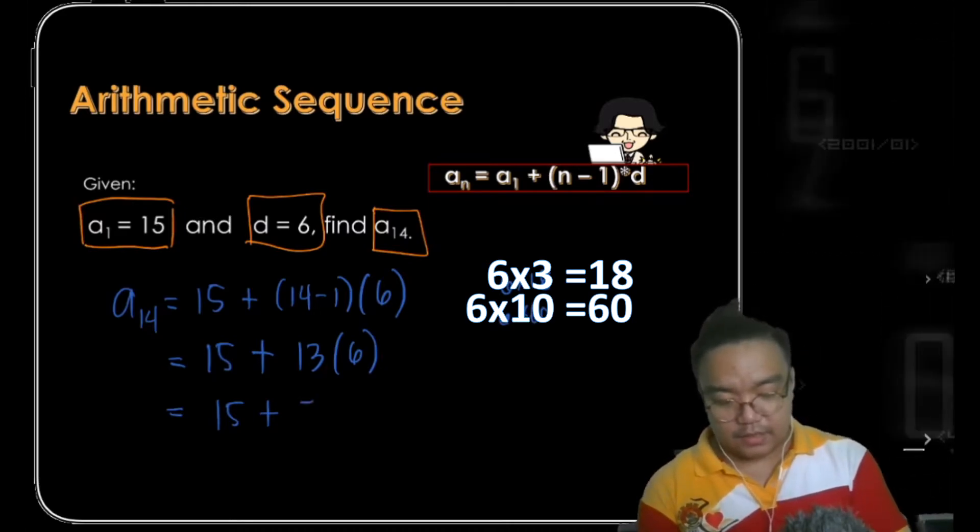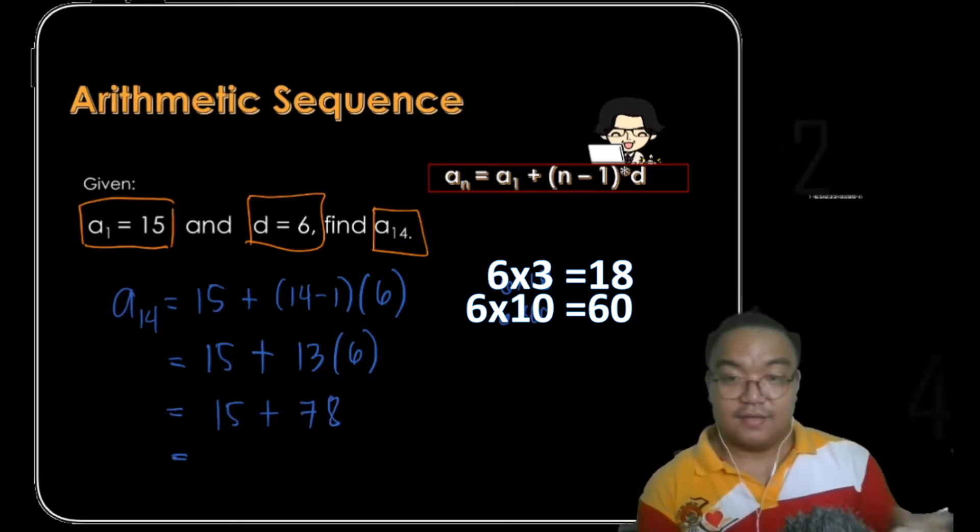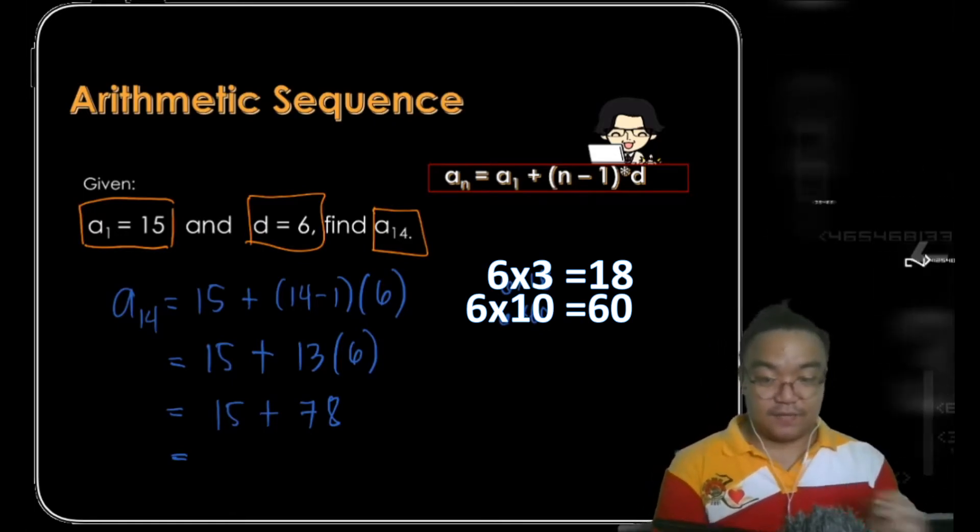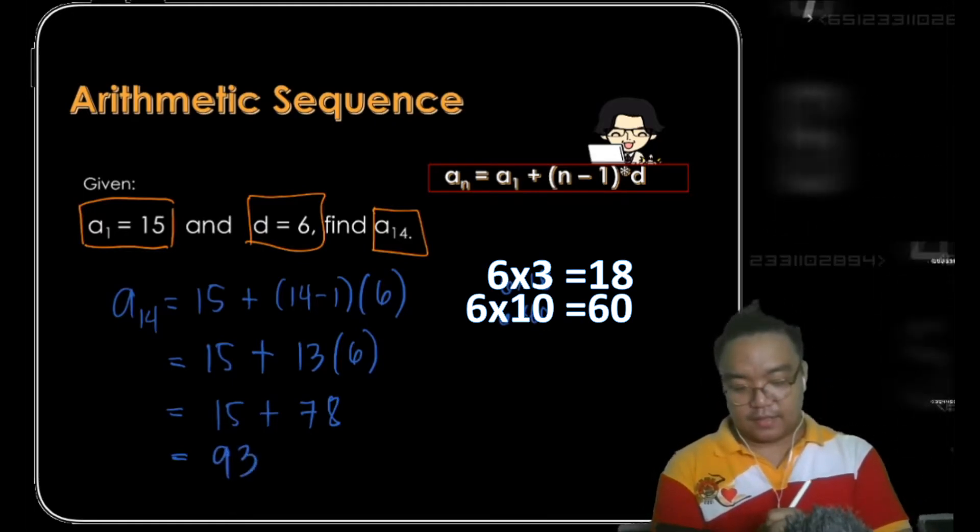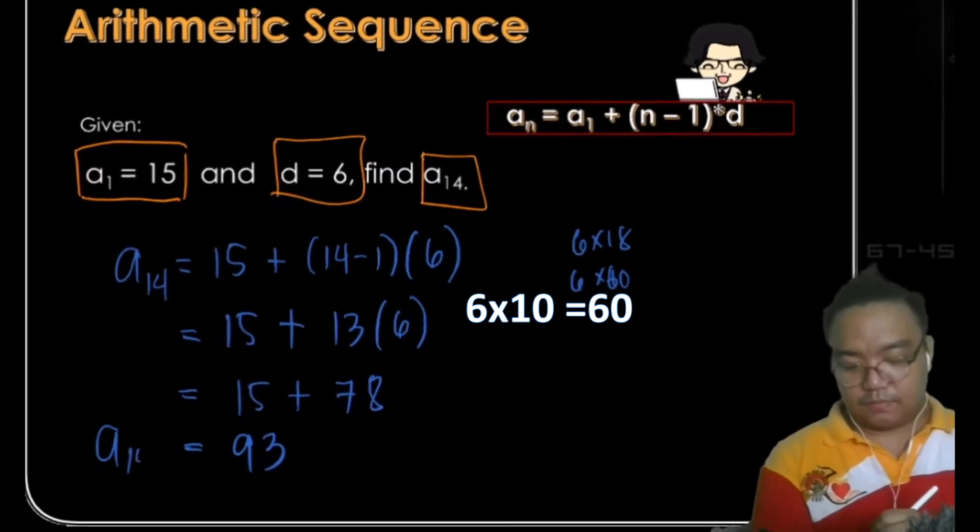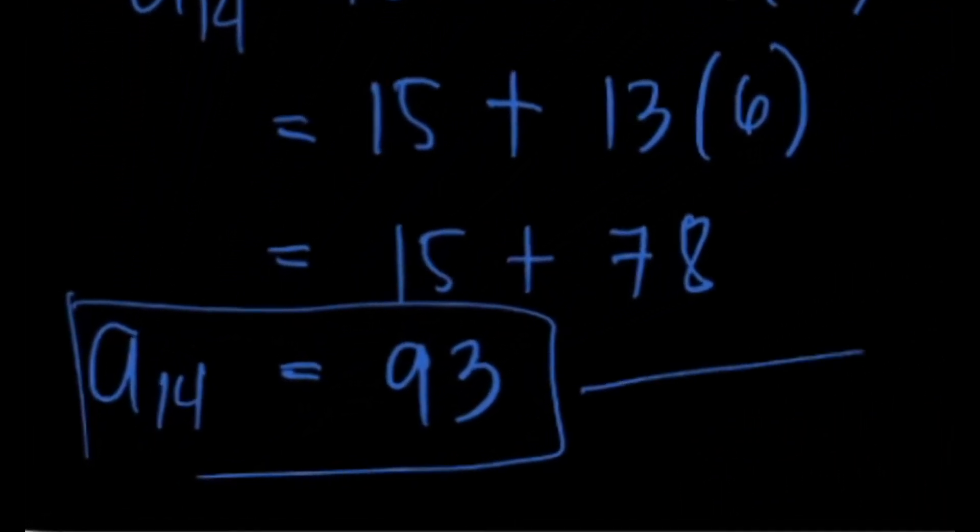So that's 60 plus 18, that's 78. 15 plus 78 gives you 93, so the 14th term for this given sequence is 93.